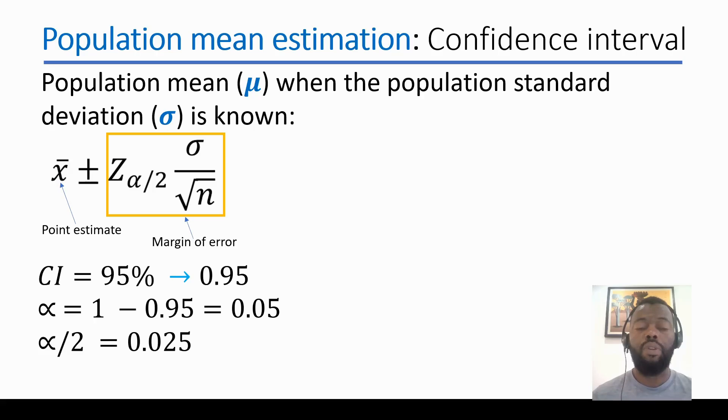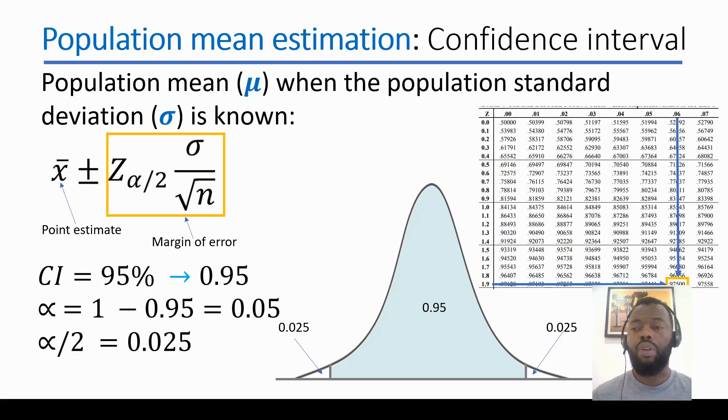We have here the normal distribution area where 95% is in the middle, and we have critical points in the tails of the normal distribution.